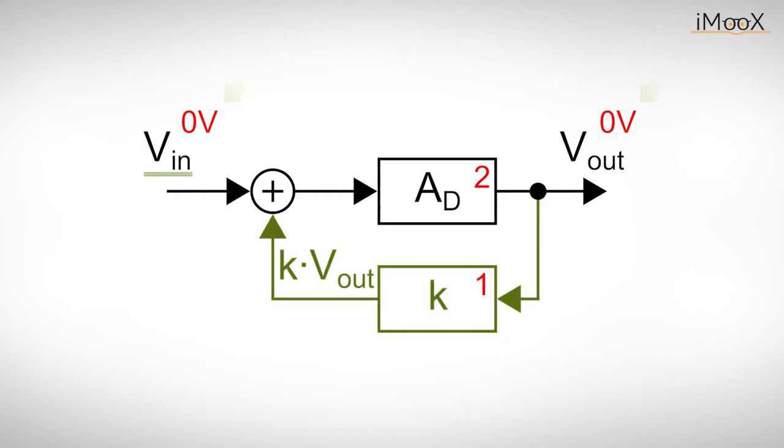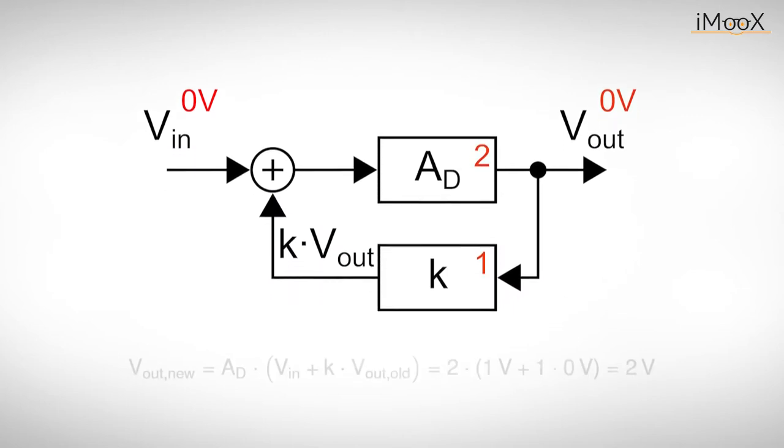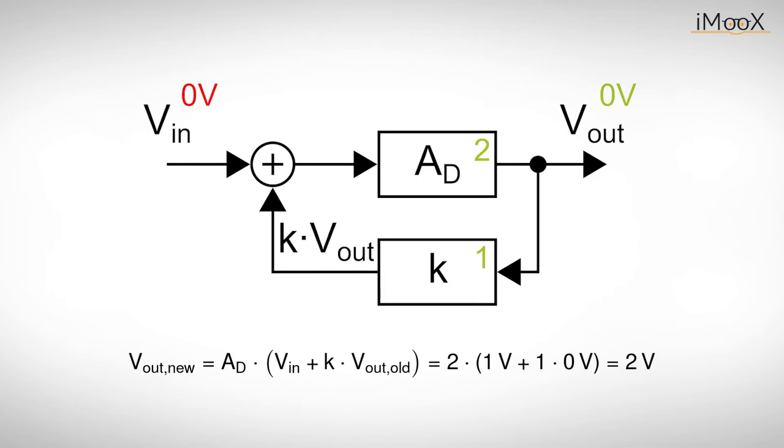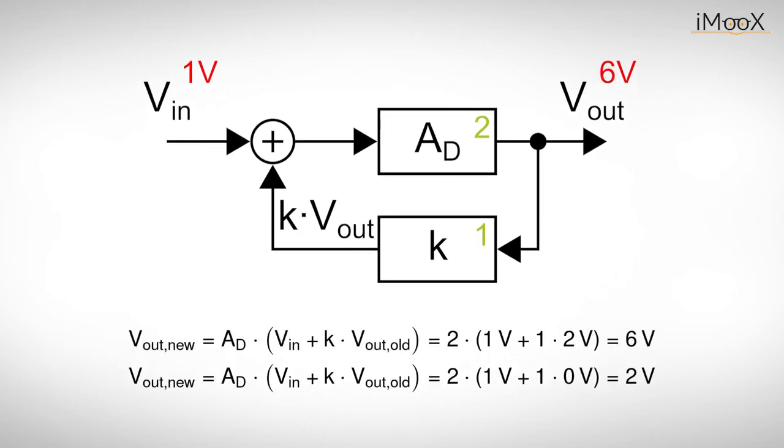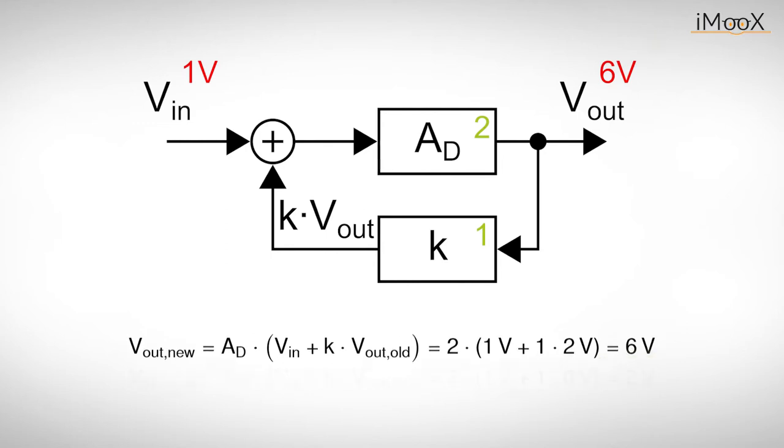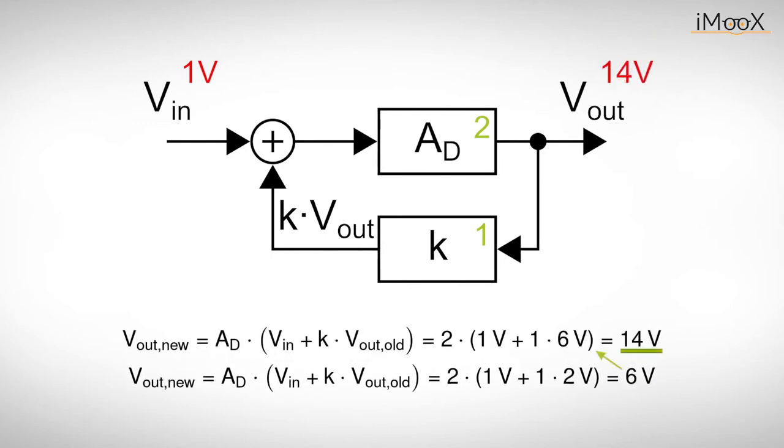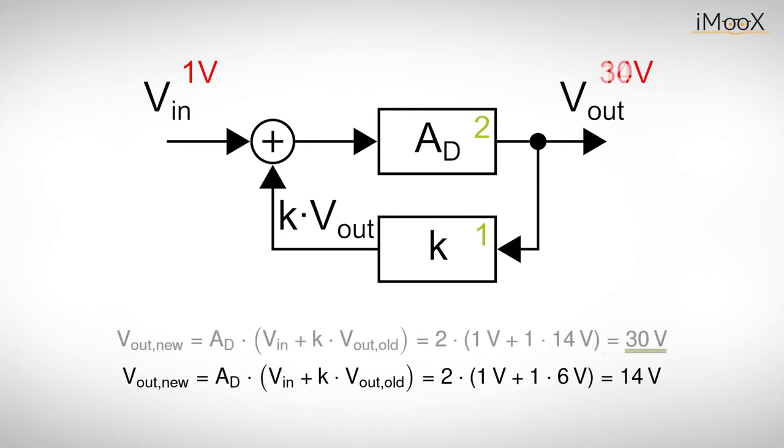But once we give the input voltage a light nudge, we trigger a chain reaction. Let us see what happens if we increase the input voltage from zero to one volt, for example. The output voltage can be described by this formula, where V_out new is the output voltage at exactly this time instance, and V_out old is the output just a little bit before that. But in the next instance, the output voltage keeps rising. This process continues, and V_out is approaching infinity.